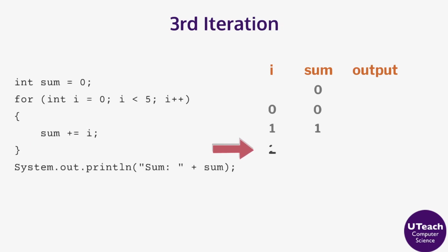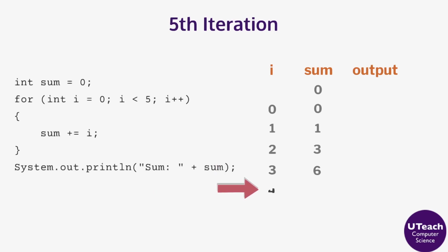For the third iteration, the value of i is added to sum and then sum is updated to 3. For the fourth iteration, the value of i is added to sum and then sum is updated to 6. For the fifth iteration, the value of i is added to sum and then sum is updated to 10.